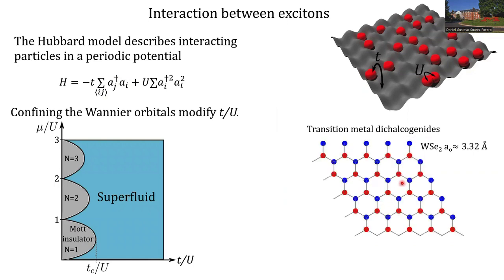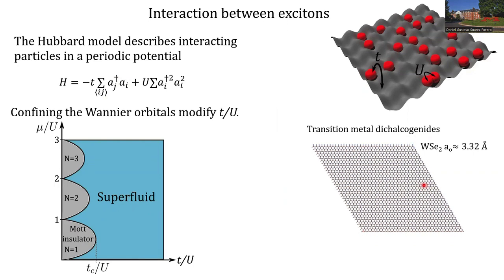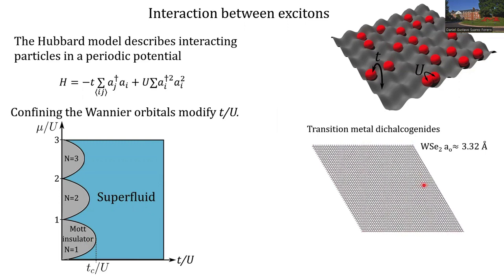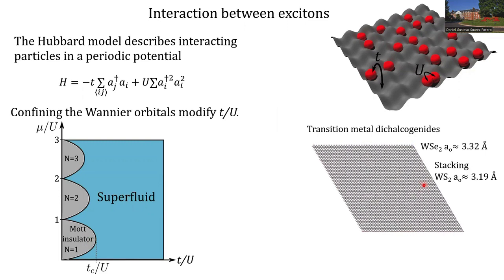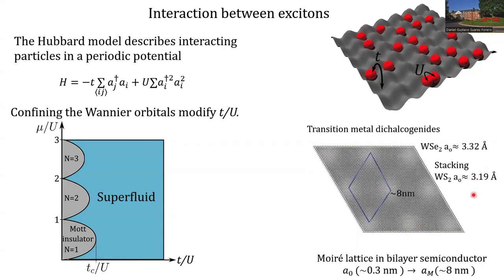One way to do it is we start from a 0.3-nanometer crystalline structure, and then we can use a second monolayer of a different material with a slight mismatch in the crystalline structure. By stacking those two together, we fundamentally change the period and the crystalline structure of the material, allowing the formation of a moiré lattice with a unit cell of about 8 nanometers.